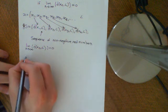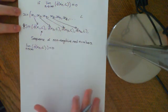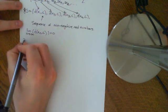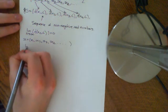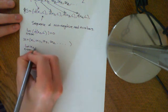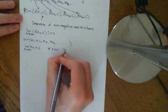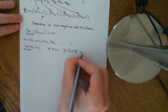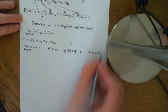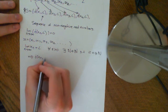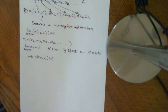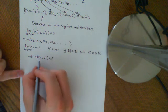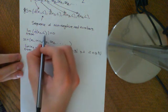Assume that we have a sequence which converges according to our initial definition in the abstract metric space. So we have sequence x = (x1, x2, x3, x4, ...) and the limit of x_n as n approaches infinity equals L. That means: for all epsilon greater than 0, there exists a big N which is an element of the natural numbers, such that if little n is greater than or equal to big N, it implies that the distance between x_n and L can be made less than epsilon.